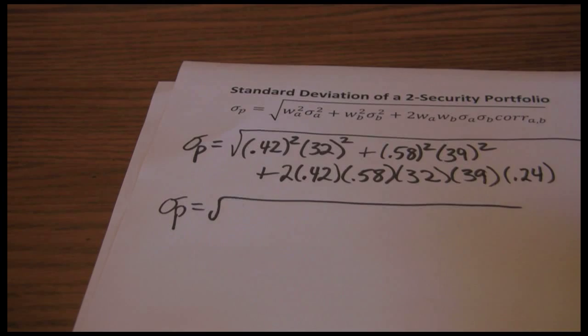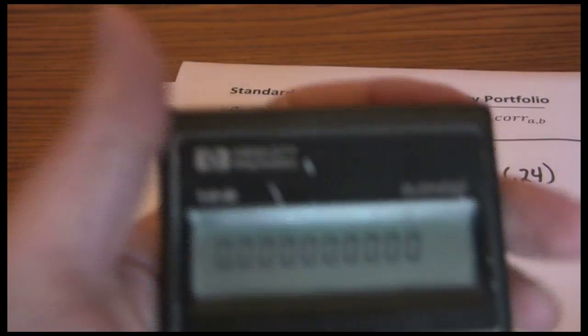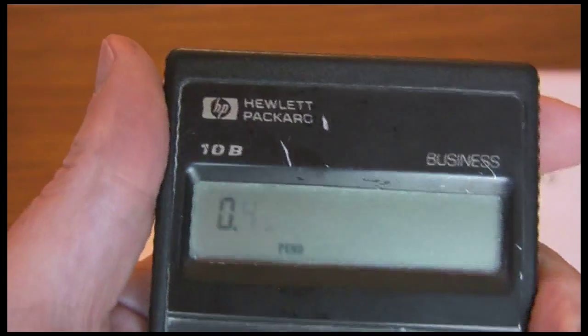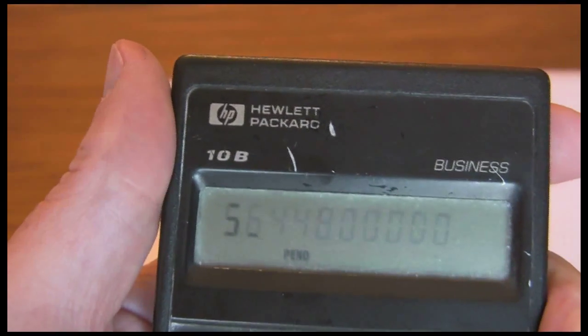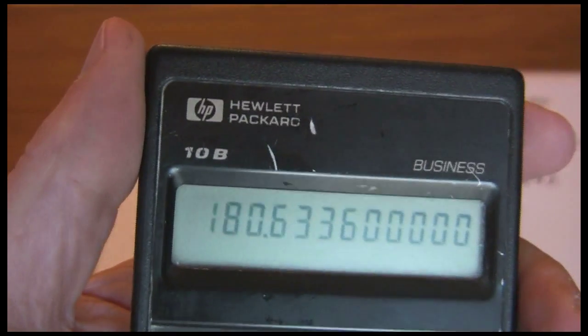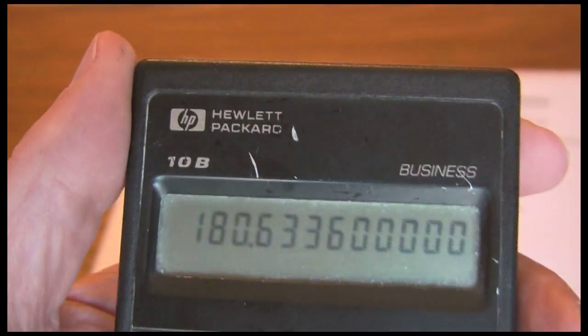First thing we need to do is 0.42 squared times 32 squared. The way I typically do this on the calculator is just 0.42 times 0.42 times 32 times 32. So instead of using the square functions on the calculator, just multiply it out. That gives us 180.63.